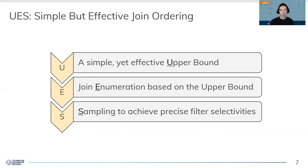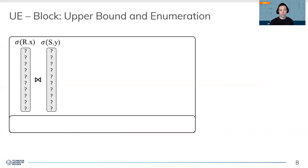Based on this upper bound, we apply our customized enumeration approach and use sampling only on the base tables to achieve very precise selectivity estimates. Let's get started with the upper bound and enumeration part. Assume we are given the estimated or exact size of two tables that need to join. In this example, it is R and S that need to join on attributes X and Y.